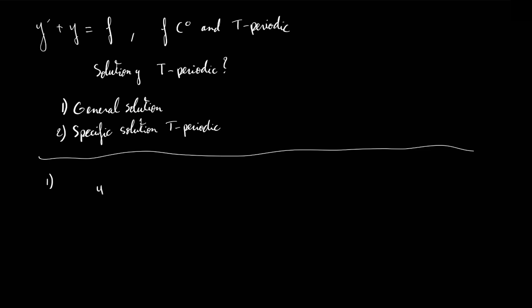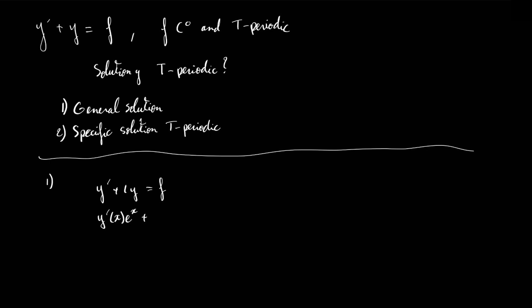This is because we have the y prime plus y that we can multiply by the exponential. So what we're going to do is write y prime times exponential of x, plus y times exponential of x, equal f of x times exponential of x. We just multiply both sides of the equation by exponential of x. Now you can notice the form u prime v plus u v prime, and you know that this is the result of differentiating the product u times v.